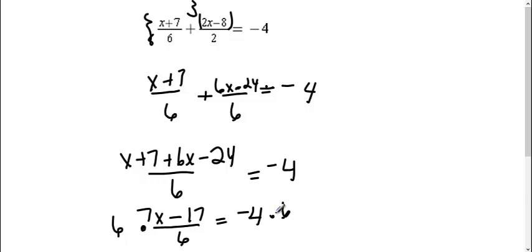What I do to one side, I have to do to the other side. So this side is gone. I'm left with 7x minus 17 equals a negative 4 times a 6 is a negative 24.